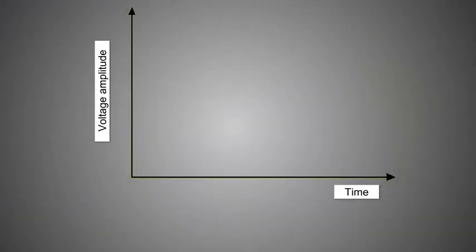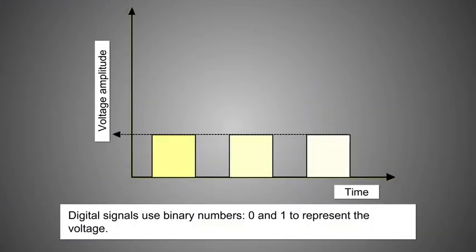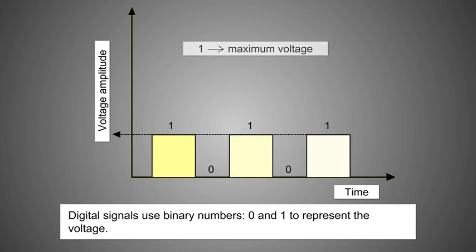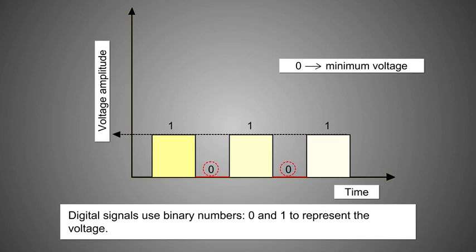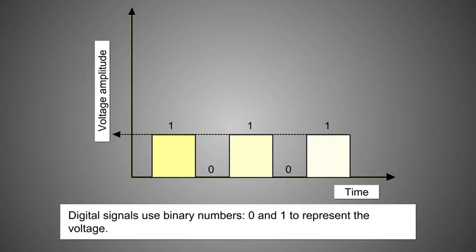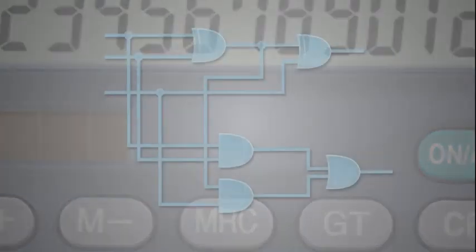On the other hand, devices like calculators and digital watches work on digital signals. Digital signals use binary numbers — 0 and 1 — to represent the voltage. The maximum value of the voltage is indicated by the state 1, and the minimum value is indicated by the state 0. Thus, in digital electronics we use only these two levels of voltage.